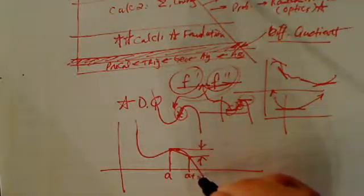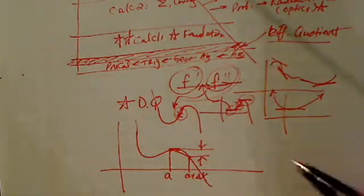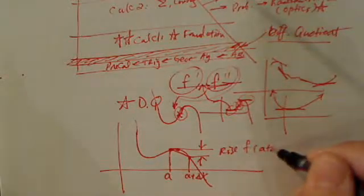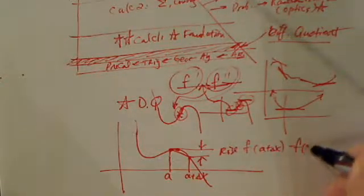But this is a. This is a plus little change in a. So the rise is f of a plus delta x minus f of a.